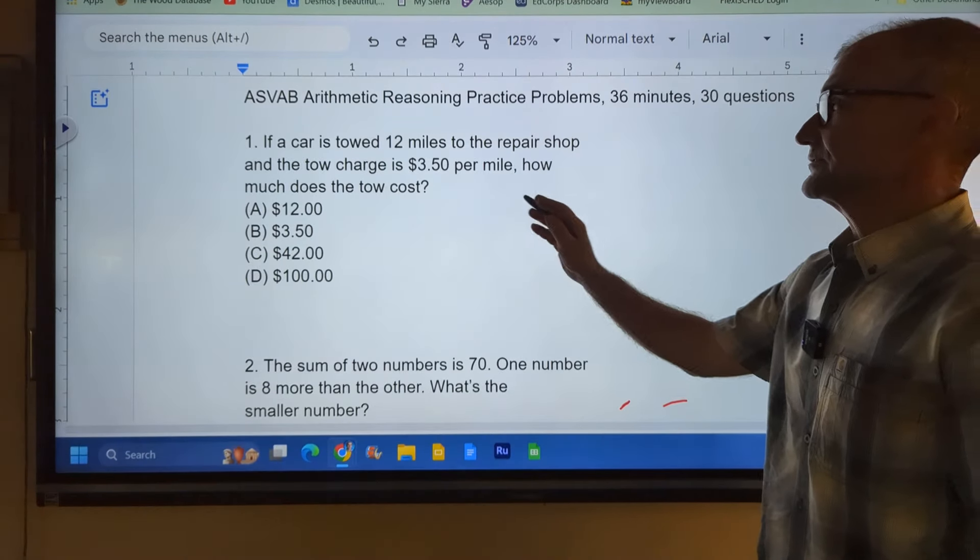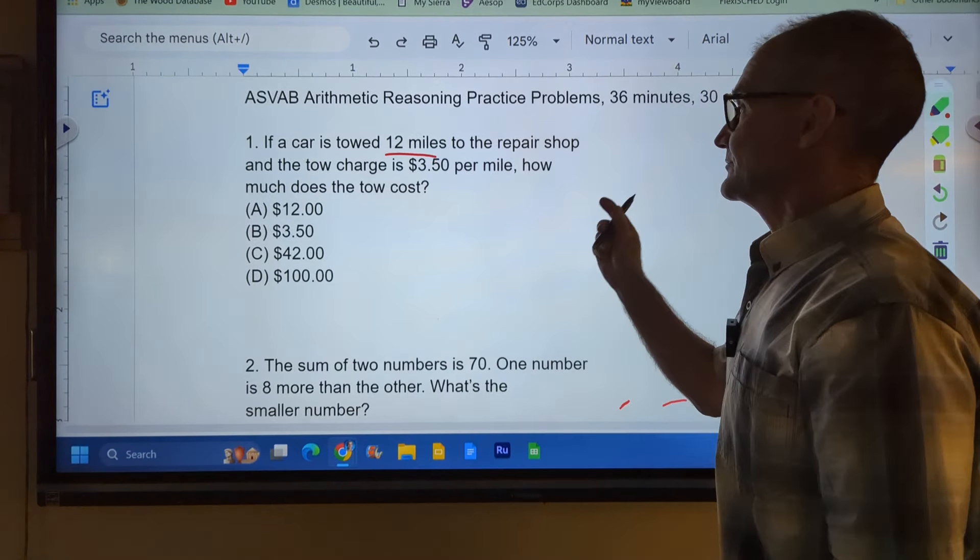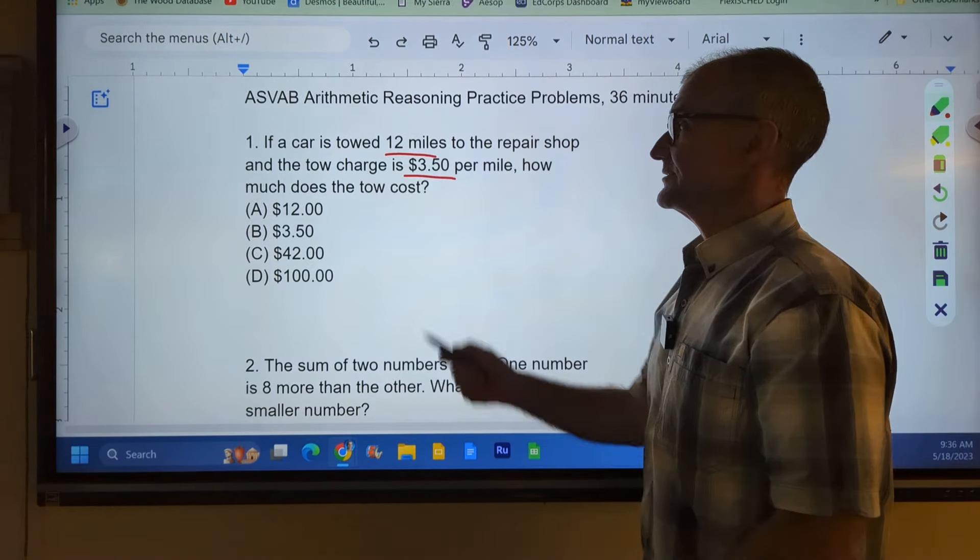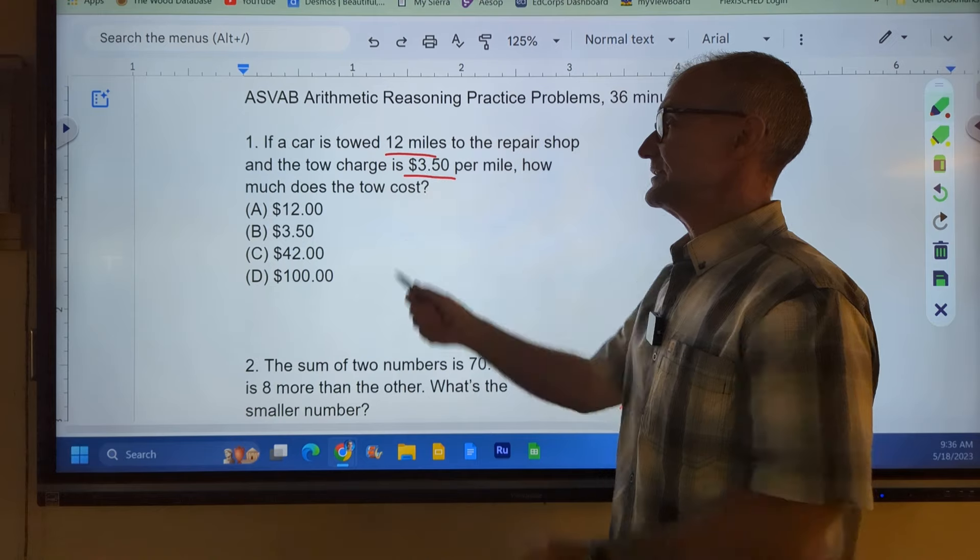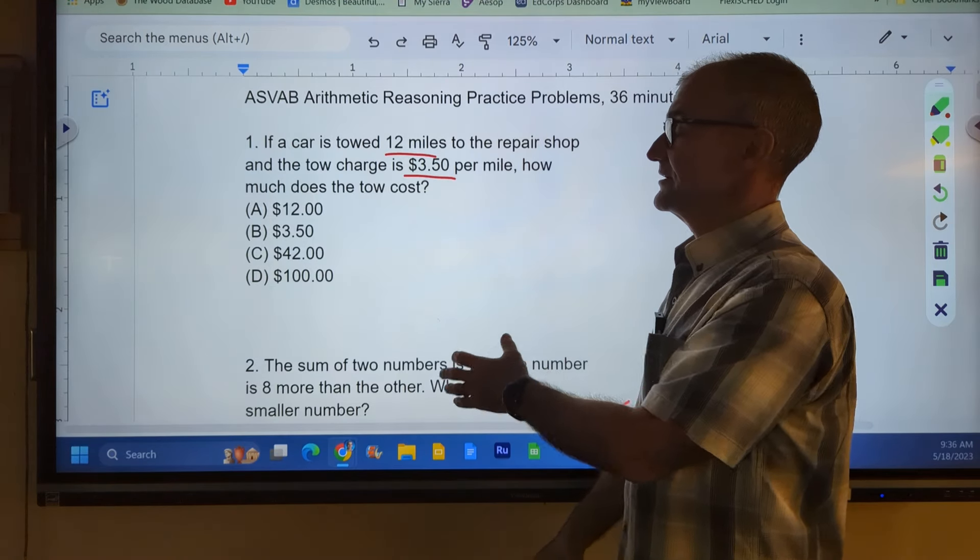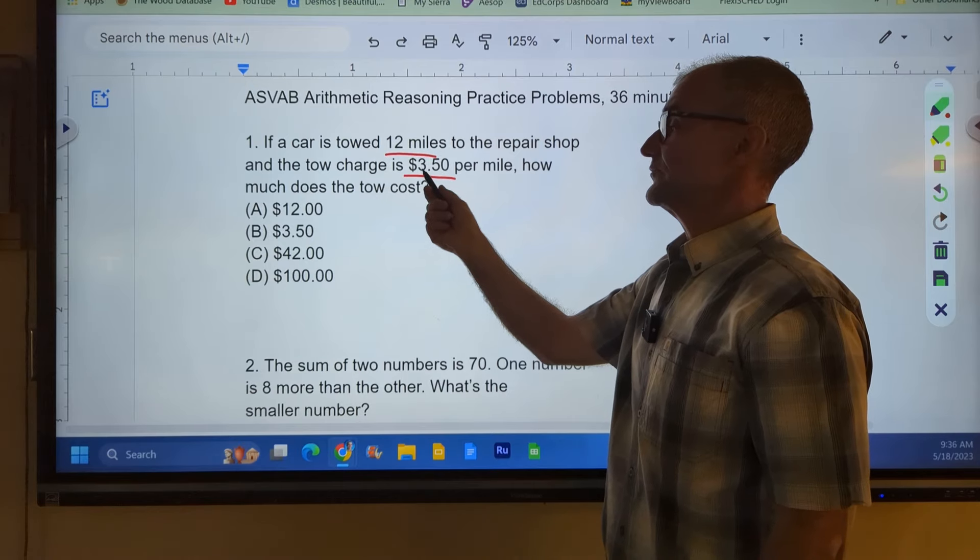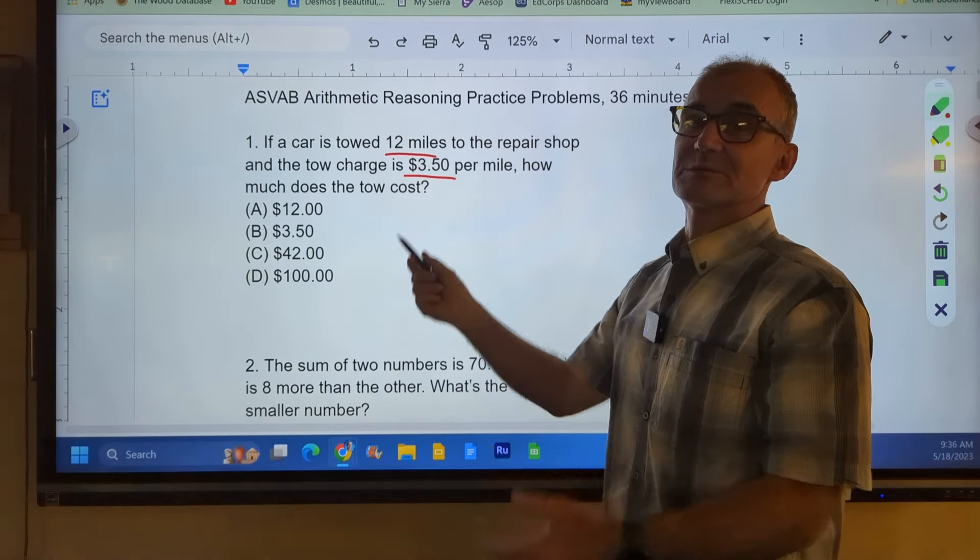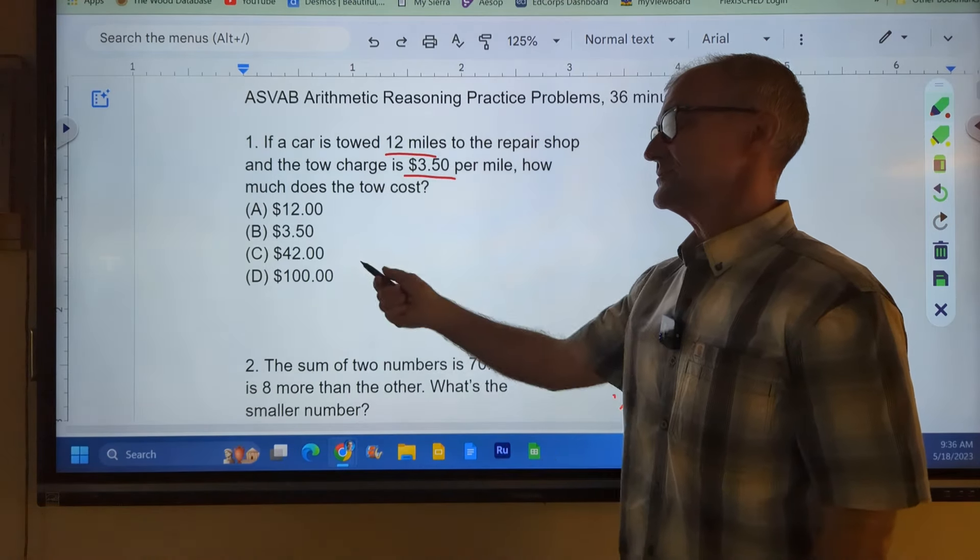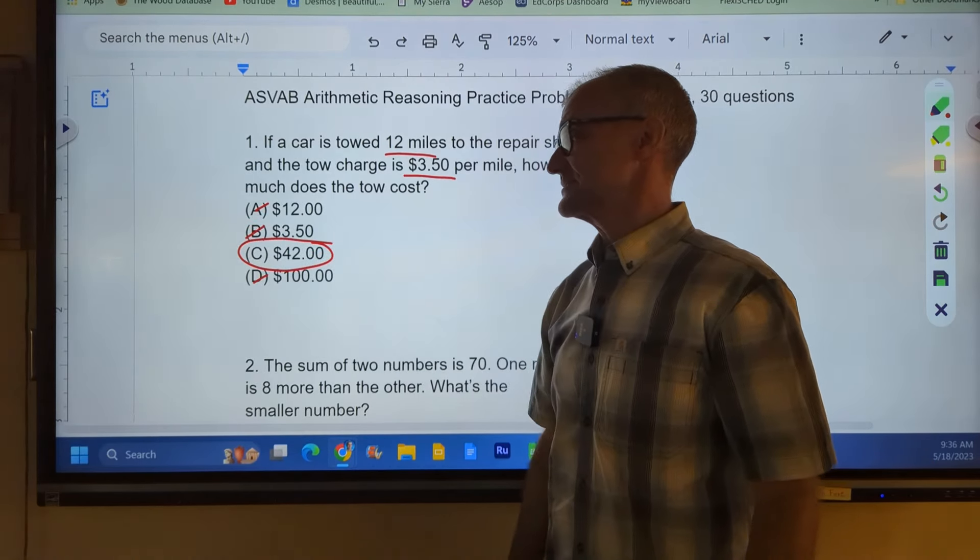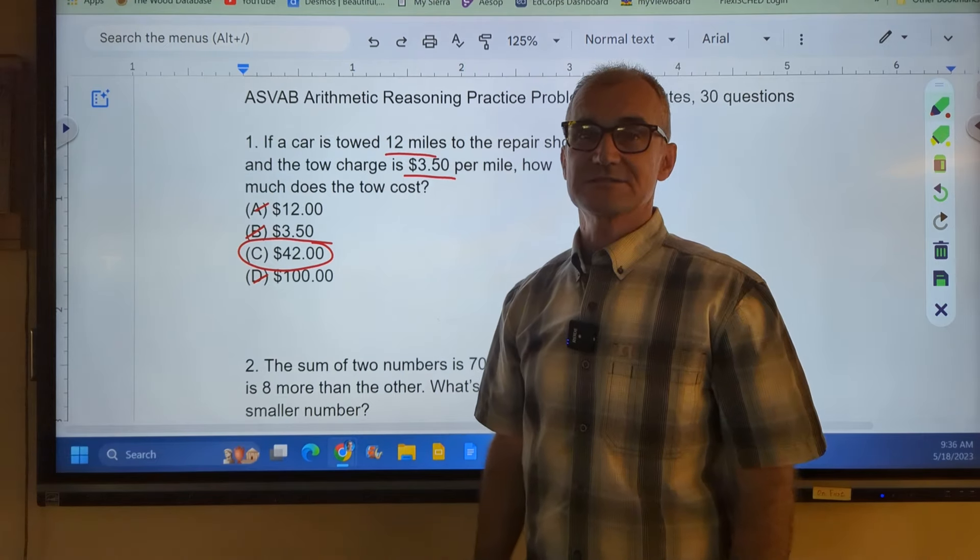All right, let's jump in. A car is towed 12 miles to the repair shop. The towing charge is $3.50 per mile. How much does it cost? So I know I need to go 12 times 3.50. I could do that long multiplication, or I could just do 12 times 3 is 36, 12 times 4 is 48. So it's somewhere between those two numbers. The only thing that's close is that one right there. All three of these other ones don't even make sense, so I jump right to answer C.